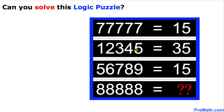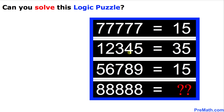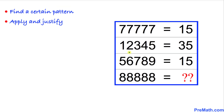Welcome to Pre-Math. In this video tutorial we are going to solve this given logic puzzle. We have the number 7 repeating itself five times, and the answer is 15. The next row: 1+2+3+4+5 equals 35, and 5+6+7+8+9 equals 15. The question is: how much is going to be the value when 8 repeats itself five times? You may pause the video and take your time.